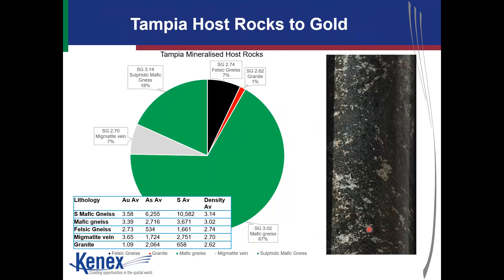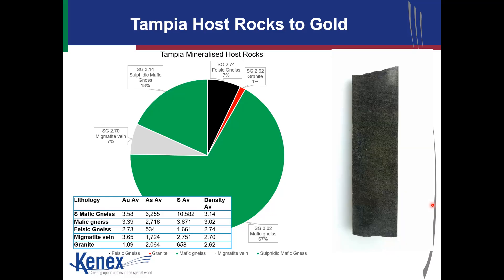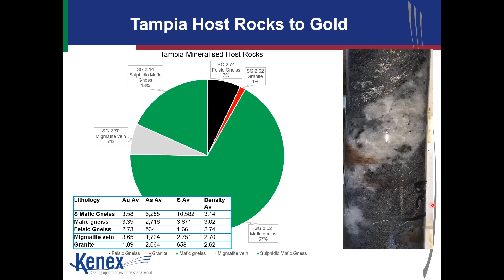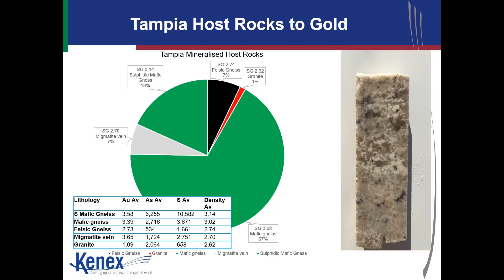The mineralisation is sulphide-dominant with arsenopyrite, pyrrhotite and loellingite as the main gold-bearing sulphides sitting in mafic gneiss. This is the unmineralised mafic gneiss, this is felsic gneiss surrounding it. The mineralisation seems to be related to where migmatites are formed, and the mineralisation sits on the edges of these migmatite veins. And this is what one of the migmatite veins looks like in detail.